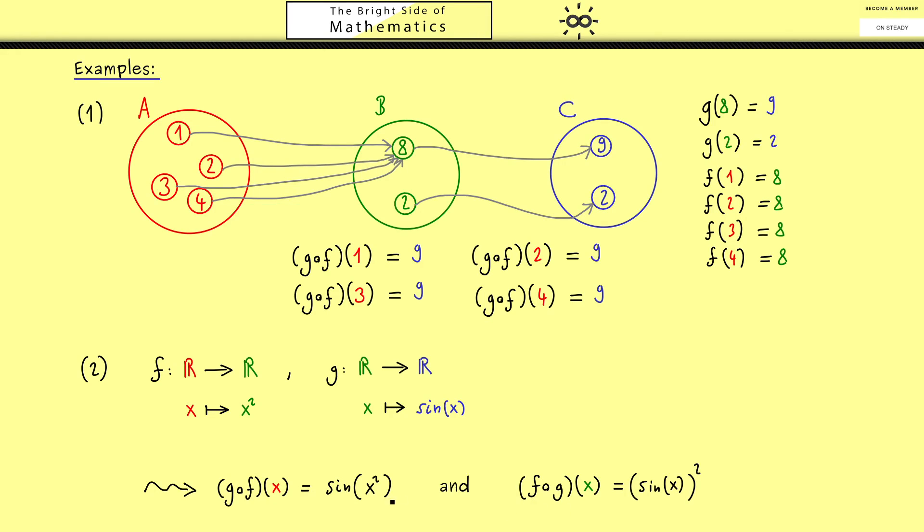Which is a totally different function than sine of x squared. So please remember for the composition the order matters and in the general case the other order does not make any sense at all.